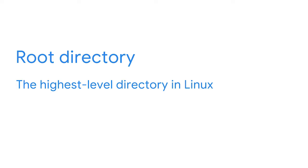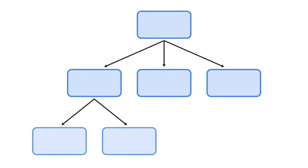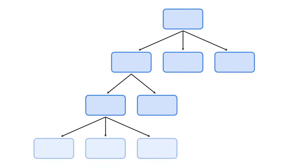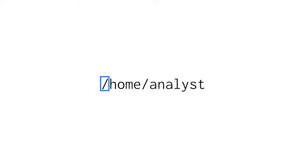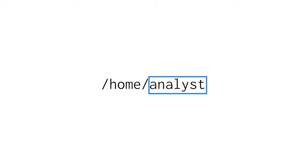The root directory is the highest level directory in Linux, designated by a single slash. Subdirectories branch out from the root directory, further and further away. When describing the directory structure in Linux, slashes are used when tracing back through these branches to the root. For example, the first slash indicates the root directory, then it branches out into the home subdirectory, then another slash branches further to the analyst subdirectory within home. When working in security, it is essential that you learn to navigate a file system to locate and analyze logs. You'll analyze log files for application usage and authentication.